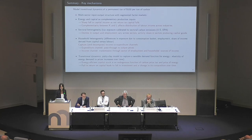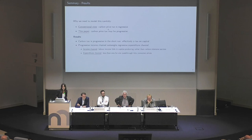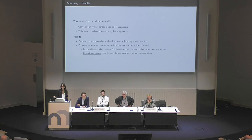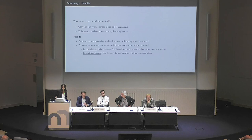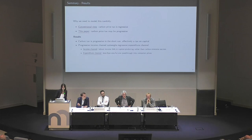Why do we need such a rich model? It's important to model this transition carefully because the conventional view is that a carbon price tax is regressive — due to effects on the consumption basket, households may consume more energy-intensive goods. But this paper shows there are opposing forces in general equilibrium, and some channels actually lead to a progressive effect of this tax. For the U.S., the tax is found to be progressive in the short run.